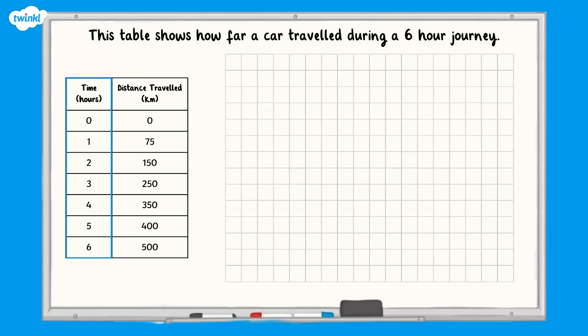If we use one square to represent one hour, our graph will be quite small. We have space here to use two squares to represent each hour, which will be 12 squares altogether.